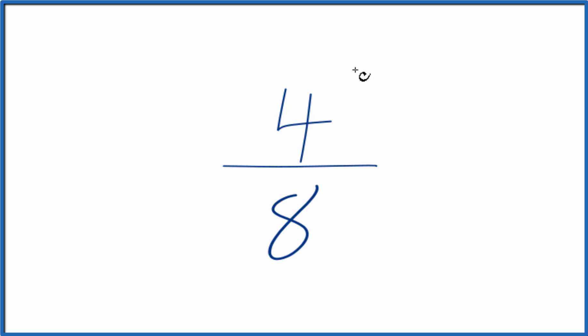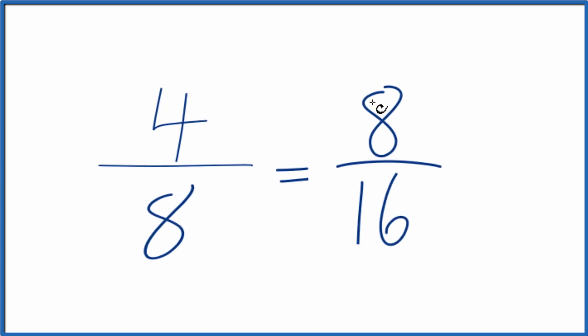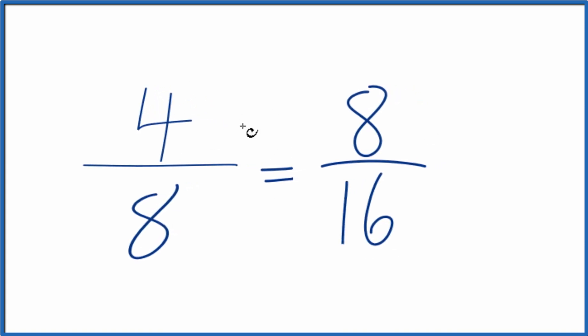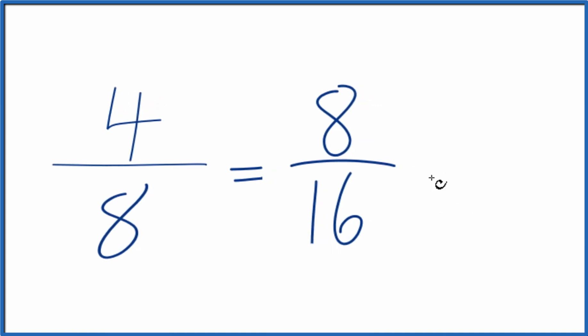So let's multiply four by two and then eight by two. Four times two is eight. Eight times two is 16, so that's an equivalent ratio for four eighths. If you divide four by eight or eight by 16, you get the same value. These are equivalent ratios.